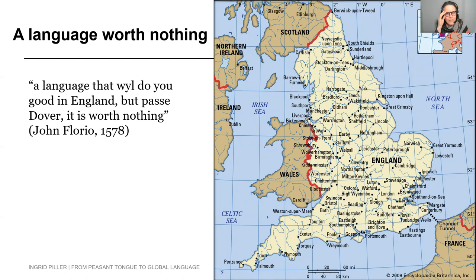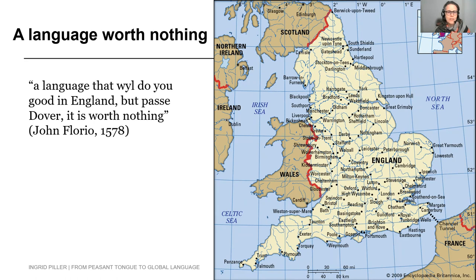Let me take you back less than 500 years. Less than 500 years ago, English was only spoken in a small corner of the globe — in what is today England, only a part of the British Isles, on the far western fringe of Europe. It was a geographically isolated small language that was actually worth nothing, as John Florio, Renaissance educator, linguist, translator, and poet of the time wrote. He wrote that English is a language that does you good in England, but once you're past Dover — the port that connects England to the continent — it is worth nothing.